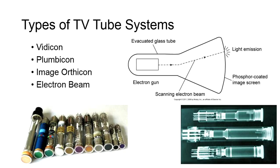There are a few types of TV camera tubes that are responsible for the conversion of light to an electronic image: Vidicon, Plumicon, Image Orthicon, and Electron Beam.